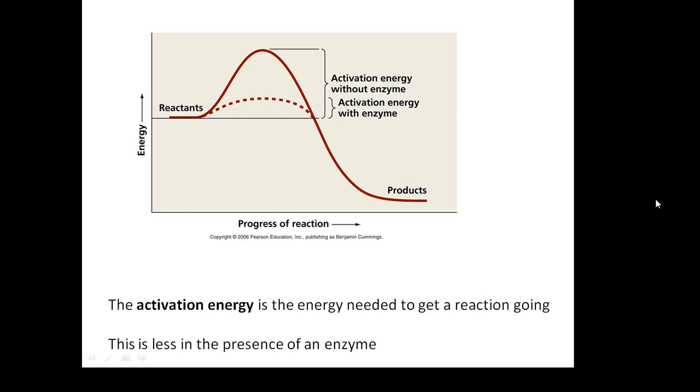Then I get much more energy out. The energy to get it going is called the activation energy. If you look at the graph, the activation energy is a lot less if there is an enzyme involved. The activation energy is the energy needed to get a reaction going. This is less in the presence of an enzyme.